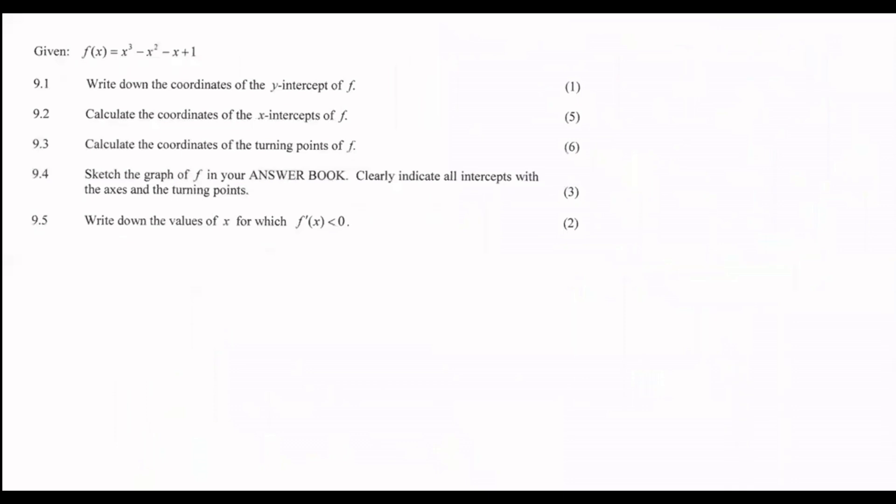So here is a calculus question. We have a cubic equation, and it says write down the coordinates of the y-intercept. That is easy marks, one mark. So the y-intercept would just be, you make x equal to zero, so you would plug in zero and zero and zero, and you would end up with a y-value of one. The answer is zero and one.